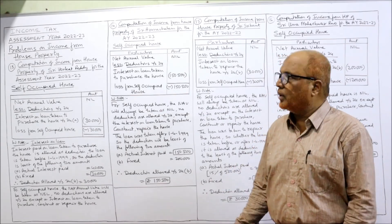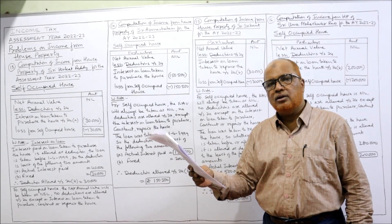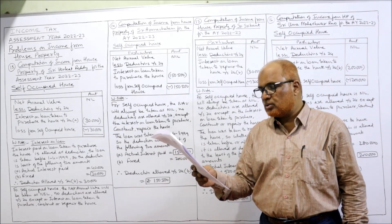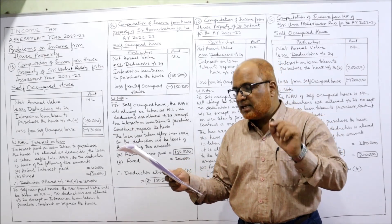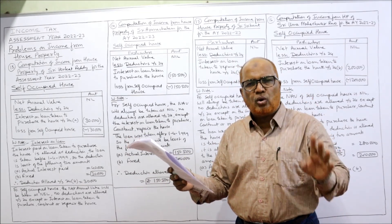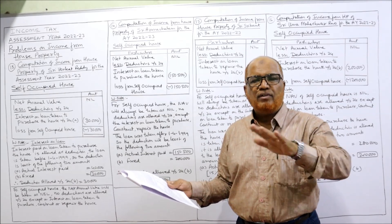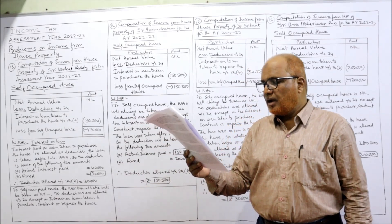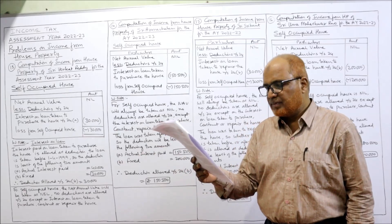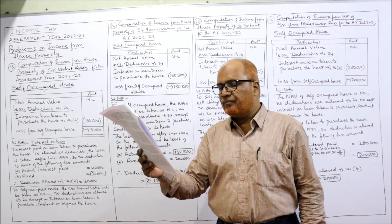Now problem number 14. Sri Arunath Chalam purchased a house in Pune on 1st July 2011 — remember the date of purchase. He is using the house completely for his residential purpose — again a self-occupied house. The fair rental value is ₹1 lakh — ignore; we don't require MRV or FRV for self-occupied houses. Municipal rental value ₹80,000 — ignore. During the previous year he paid municipal taxes ₹12,000 — no deduction for that. Land revenue — ignore. Interest on loan taken to purchase the house: ₹1,50,500.